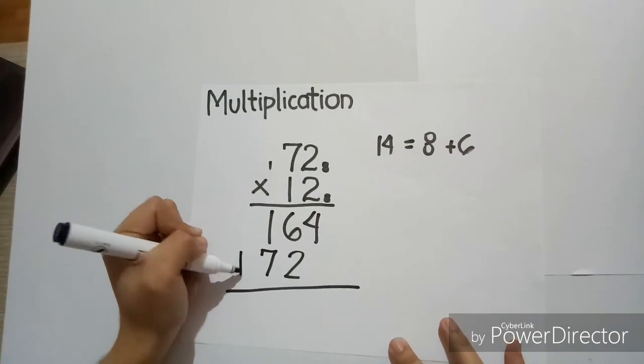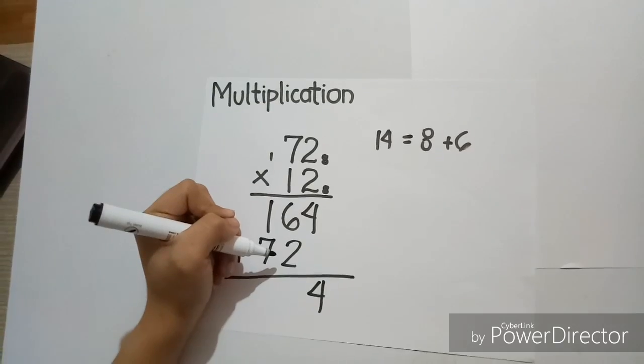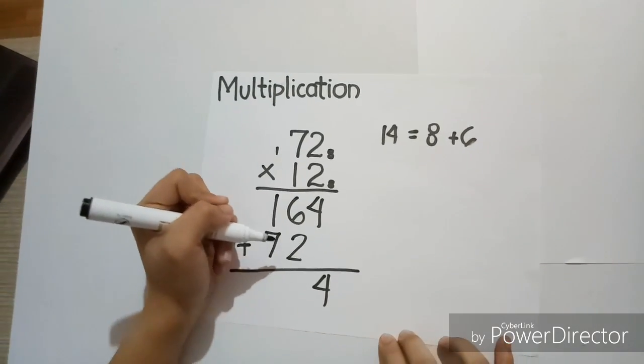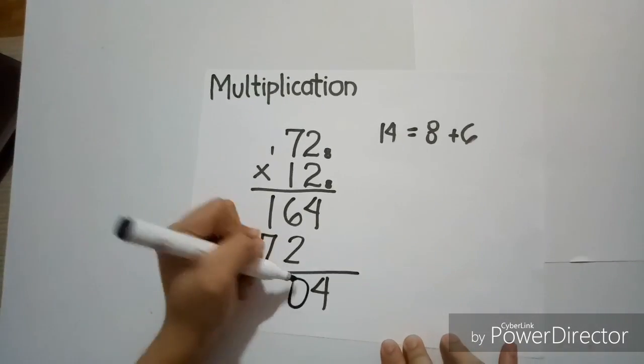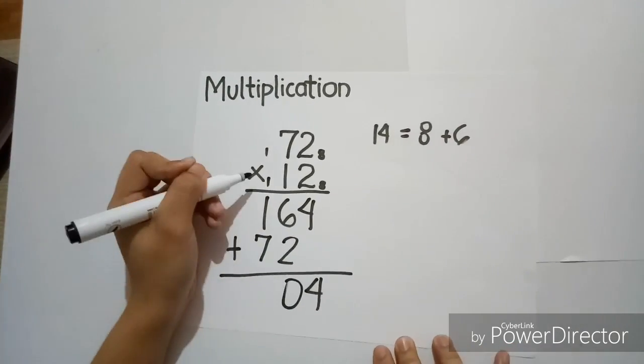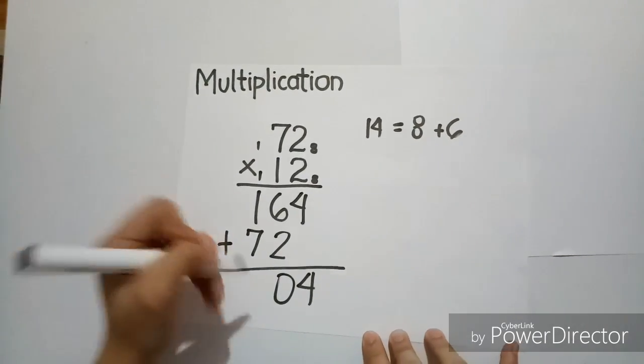Now, adding them, let's bring down 4. 6 plus 2 is equal to 8, which is equal to 8 plus 0. So, let's take 0, then carry 1. And 7 plus 1 plus 1 is equal to 9, which is equal to 8 plus 1.